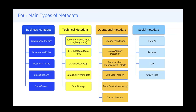Technical metadata — as the name suggests — is technical information about the data structures. The third type is operational metadata, often called runtime metadata. The last is social metadata: when people are collaborating on data within the enterprise, what other information can we gather — ratings, reviews, tags, and activity logs around those metadata objects. All of that comes under social metadata.